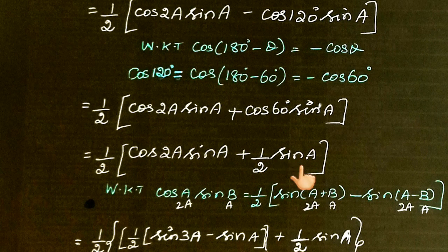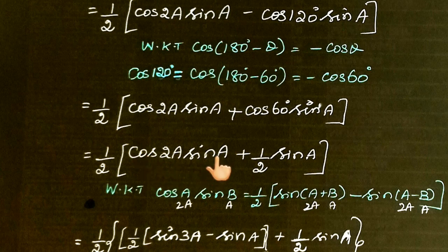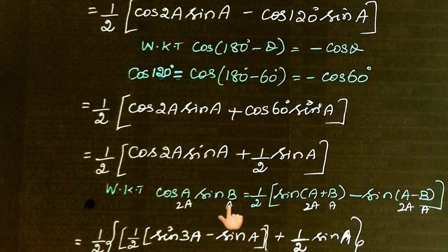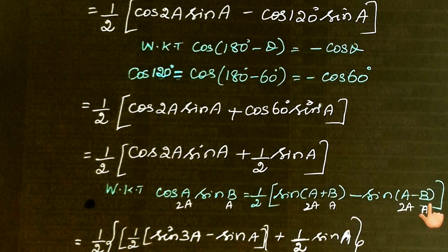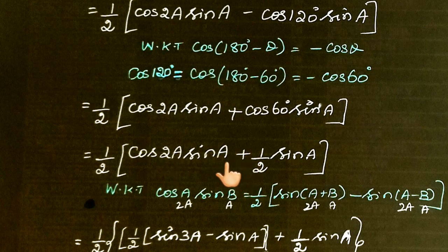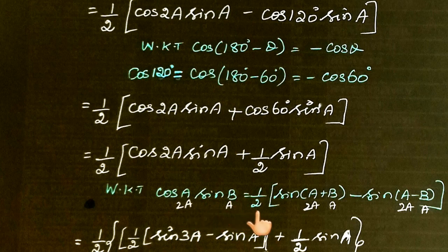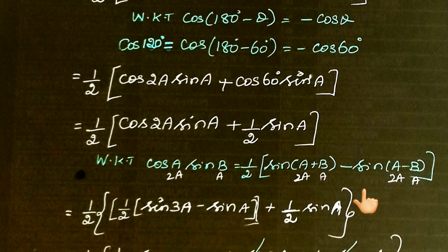For cos(A)sin(B), the identity is 1/2[sin(A+B) - sin(A-B)]. With A=2A and B=A, we get A+B = 2A+A = 3A, and A-B = 2A-A = A. So cos(2A)sin(A) = 1/2[sin(3A) - sin(A)].